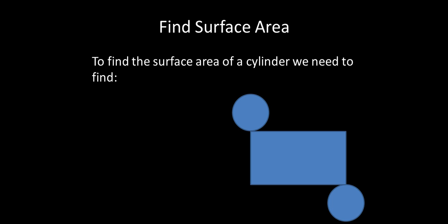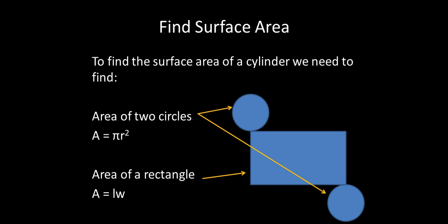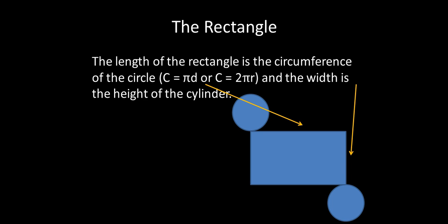So to find the surface area of a cylinder, all you need to find is the area of the two circles using our area of the circle equation, and then the area of a rectangle. Now it's a little bit more complicated than that because the area of the rectangle, we have to figure out what the length and width are. And the length is the circumference of that circle, and the width is the height of the cylinder.